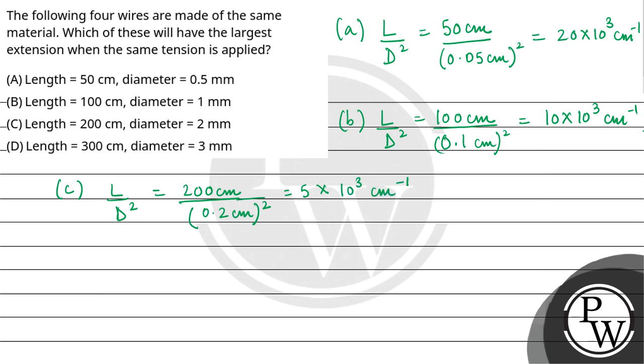And for fourth wire, L by d square will be equal to 300 upon diameter 0.3 cm square. So this will be 3.3 into 10 raised to the power 3 cm inverse. Ab aapke L by d square ki value sabse zyadha hai for first wire.